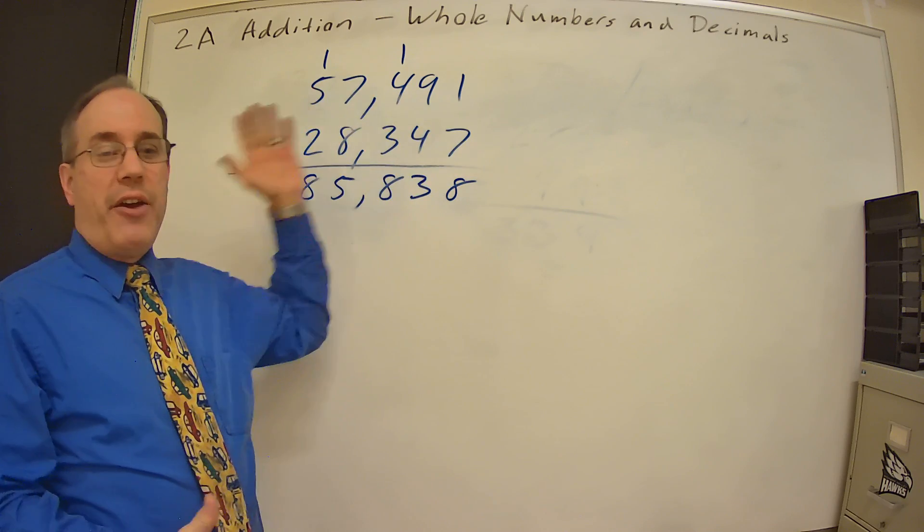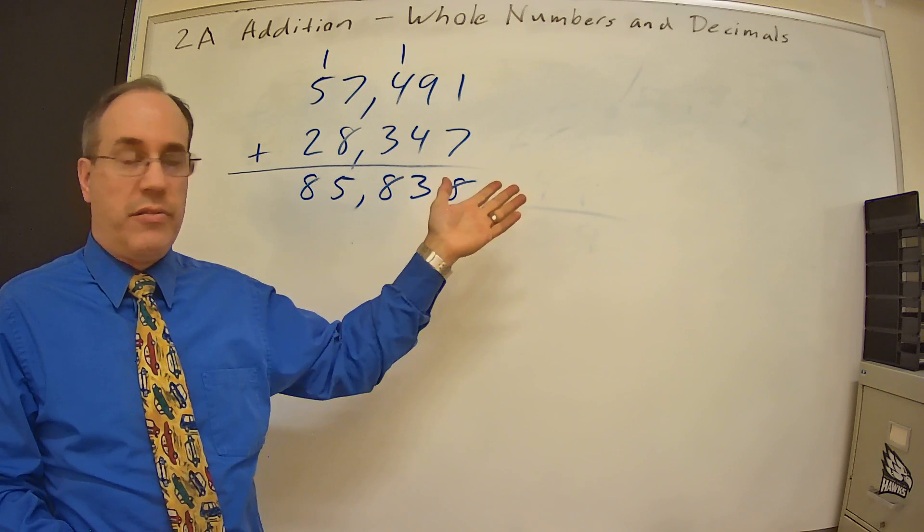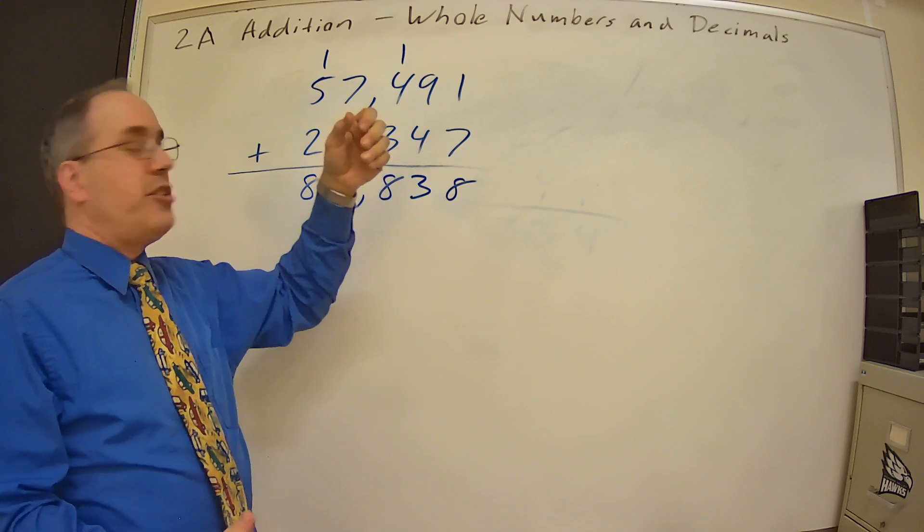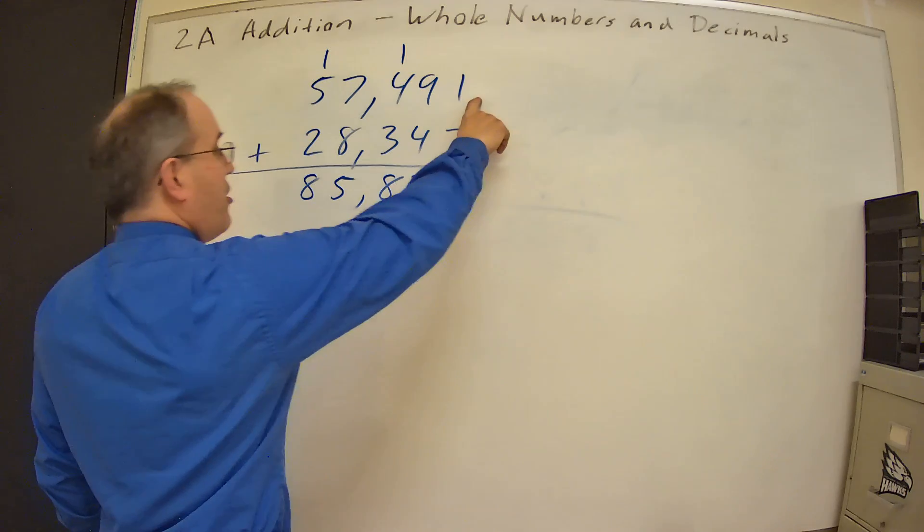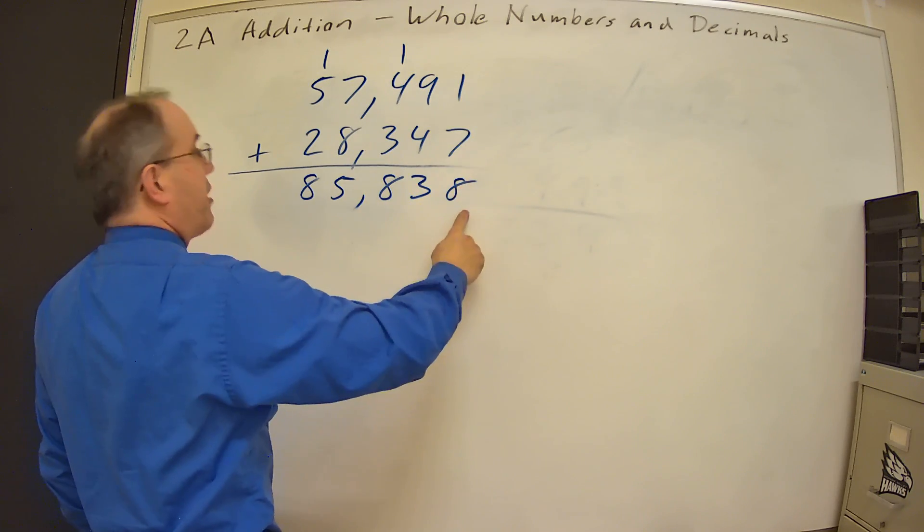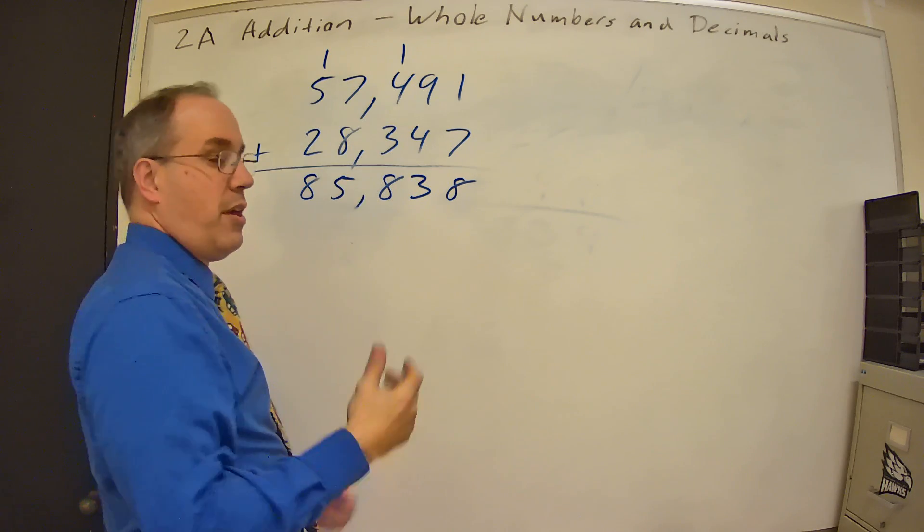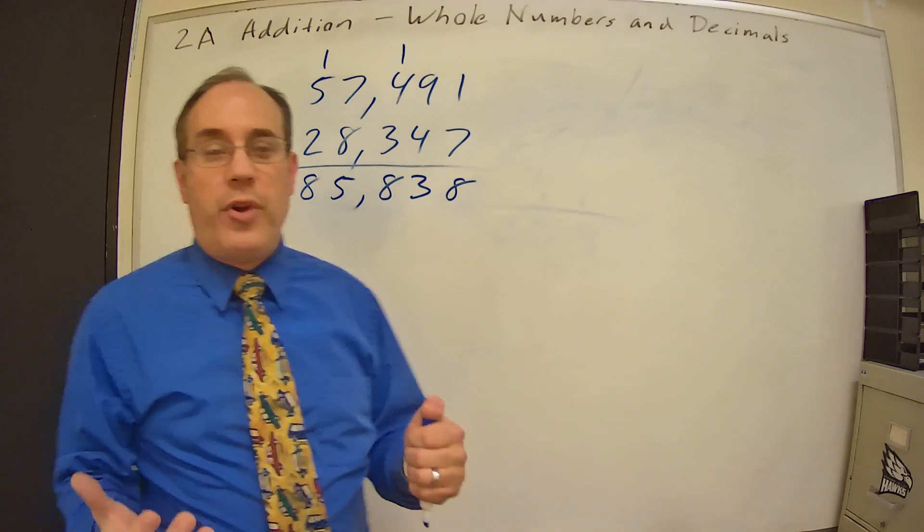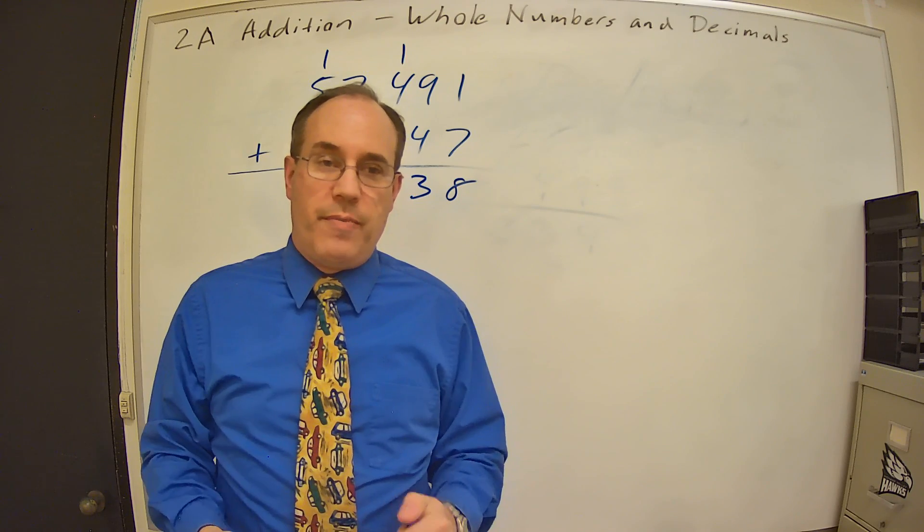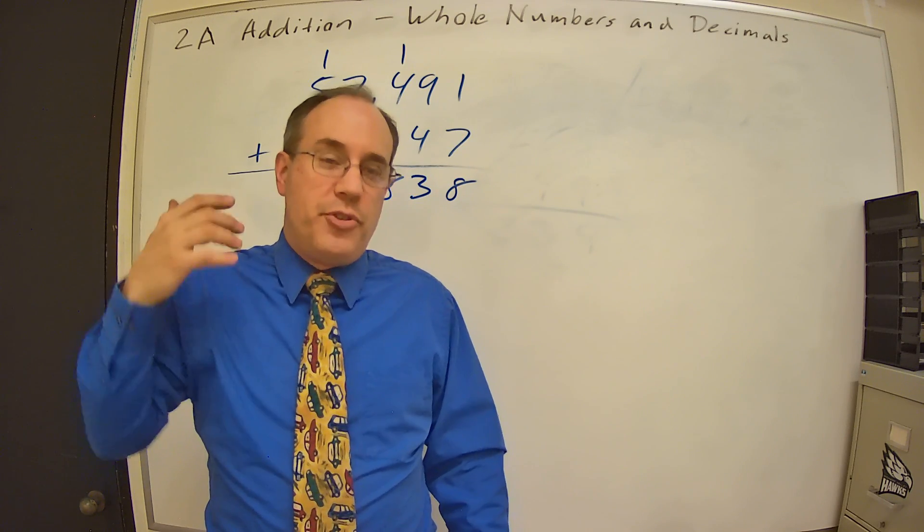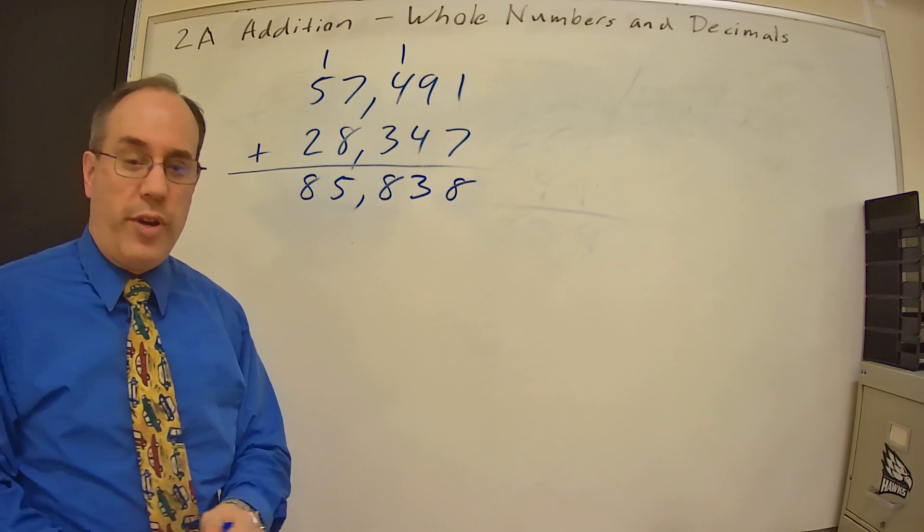So it doesn't matter how many places I add here, how many digits we have per number. It's the same process. Add the two single digit numbers, get a result. Carry if you have to. Add the two, get a result. Carry if you have to. So remember what I said, this is all based on can you add single digit numbers. So you need to be able to do that. Then it's just repeating that process over and over again.